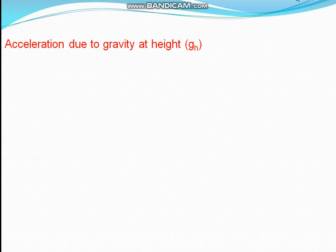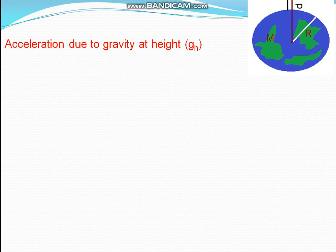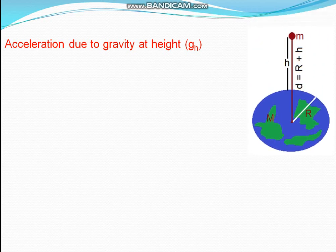Now, acceleration due to gravity at height — denoted by g-h, where h is the height used as a subscript. If you see the figure, capital M is the mass of the heavenly body, R is the radius of the heavenly body. For the earth, an object of mass small m is placed at a height h from the surface of the earth, but distance is measured from the center, so its distance will be R plus h.